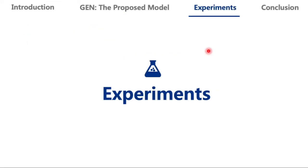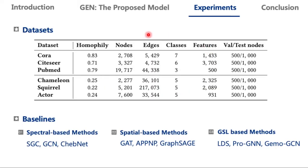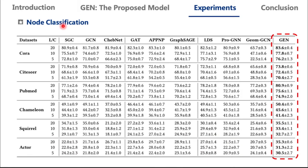Let me show experimental results. We validate the proposed GEN on six open graph datasets, and we compare GEN with three categories of methods, including three spectral-based methods, three spatial-based methods, and three graph structure learning-based methods. For node classification, in addition to 20 labels per class, we also evaluate the performance when 10 or 5 per class are available. In this table, we report the mean and standard deviation results. We can see GEN consistently outperforms other baselines on six datasets, especially under reduced-label and disassortative settings.